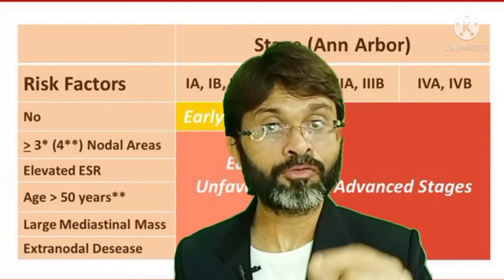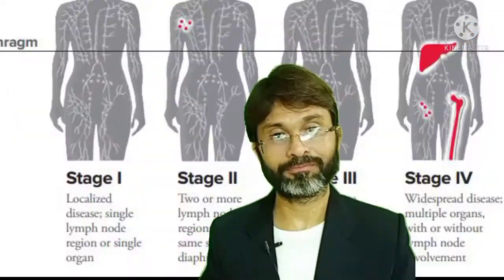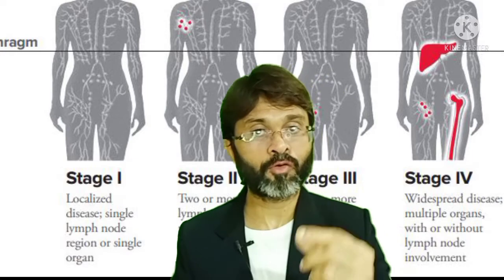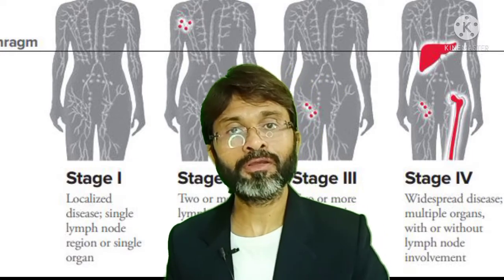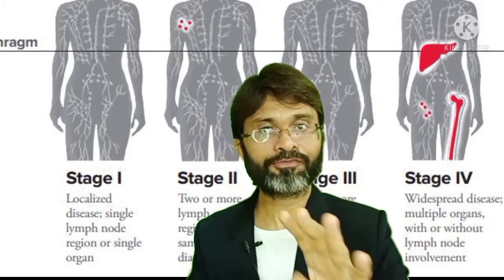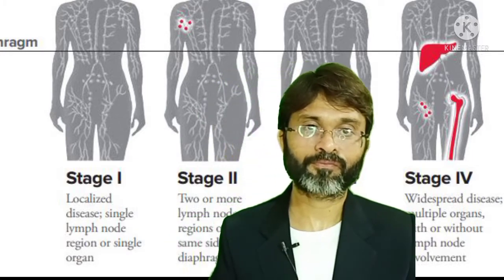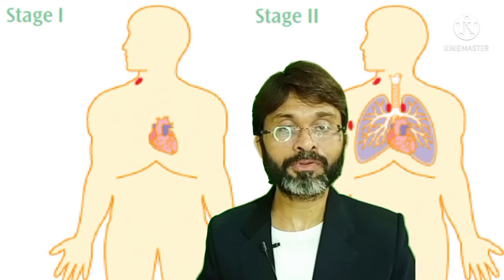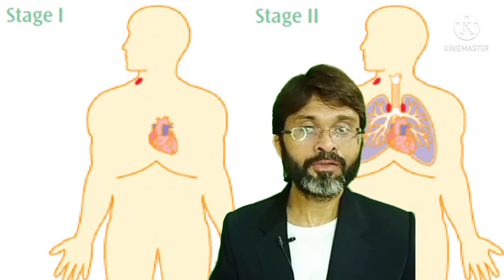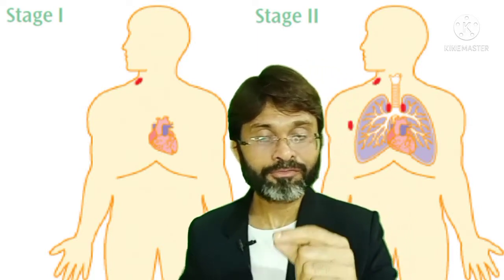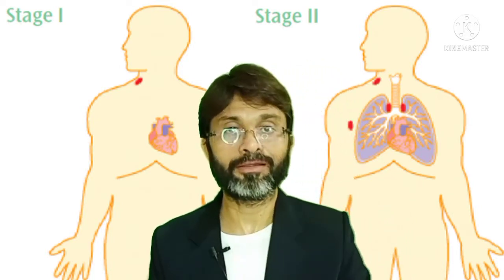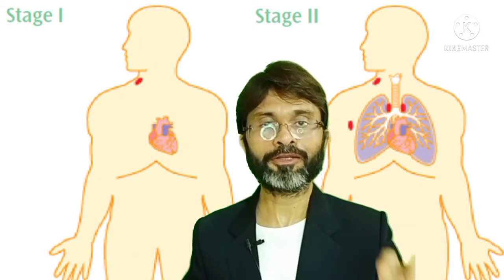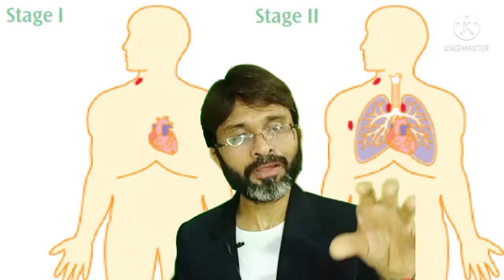Now let's talk about the stages. Hodgkin's disease has 4 stages. In stage 1, the cancerous cells are found in a single region or a single organ.